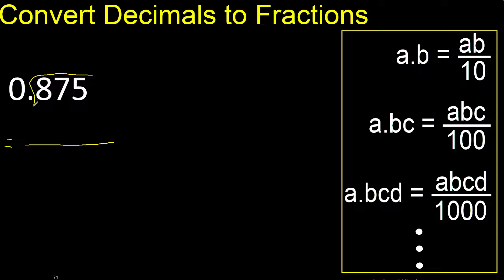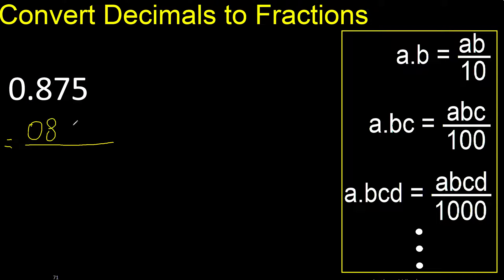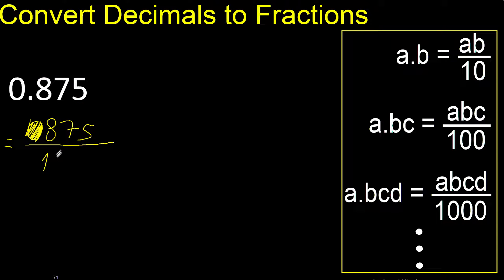First, all the number without point — like this. Eliminate zero on this side. Here, always number 1. After the point, there are three numbers, therefore three zeros.